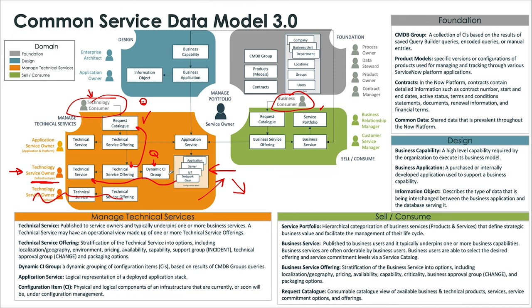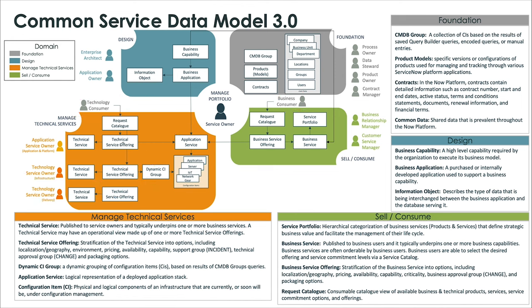This is an important part of the technology service difference — there is no particular subscriber. The person that ordered those technology services and stood them up was usually on a project, and they leave the project afterwards. The context of use is really established at the app service. For the next tier of application services, which is applications and platforms, this is again with the technology consumer in mind.